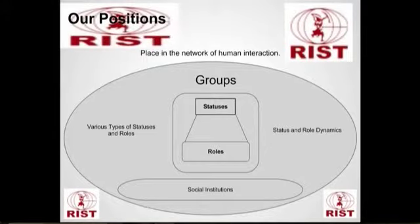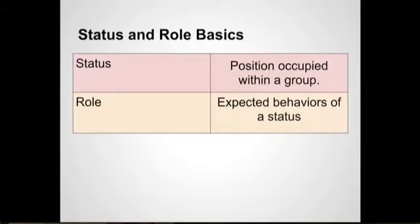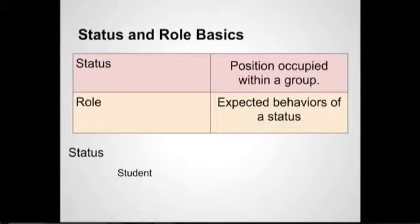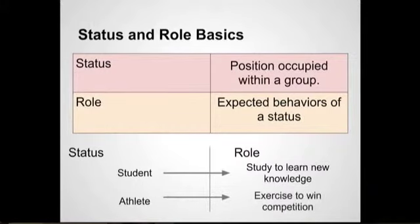The basics here at RIST: a status is a position that we occupy within a group. A role that goes with a specific status is what's expected of us in our behaviors. For example, a status could be a student, and a student's role is to study and learn new knowledge. Likewise, an athlete would have the role to exercise and to win.